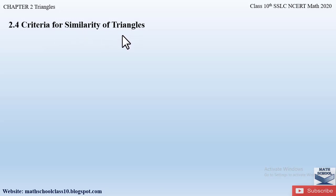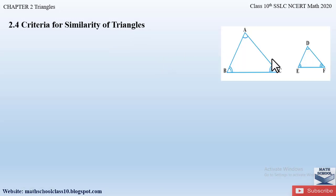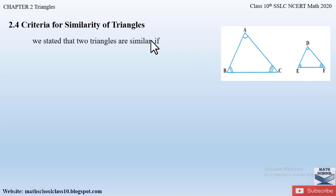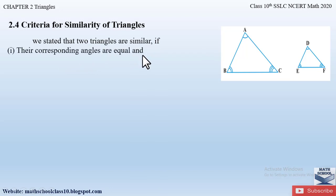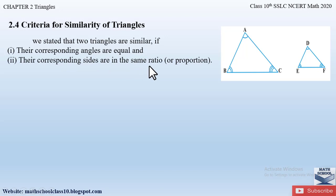The criteria for similarity of triangles we have already studied in the introduction part of this chapter. If we have two triangles such as ABC and DEF and if we have to prove that these two triangles are similar, two triangles are similar if the corresponding angles are equal and the corresponding sides are in the same ratio or same proportion.